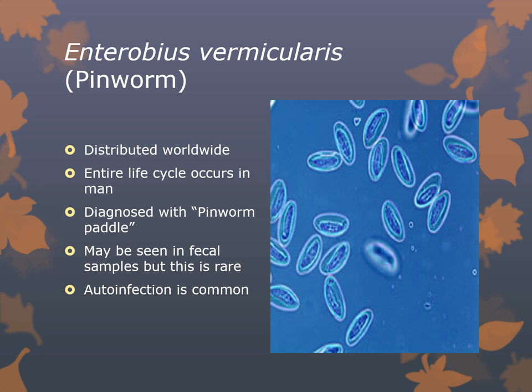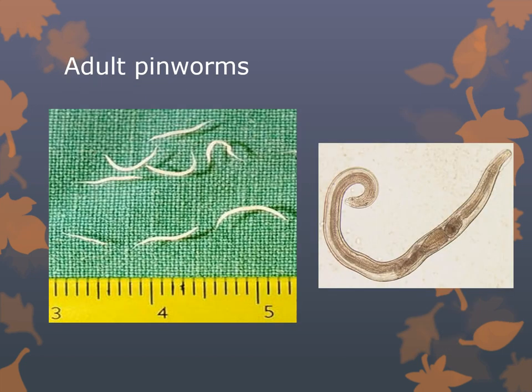Ova may be seen in fecal samples, but that is rare — the pinworm paddle is preferred. Auto-reinfection is common: ova are laid in the perianal region, the female dies, and larvae hatch and re-enter the GI tract through the anus. Adult pinworms are not very large. The rear looks like a pin. It has what's known as paraoral alae, which are wings, and they are about 13 to 18 millimeters in length.